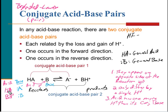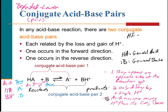The third thing to notice: the acid has one more hydrogen than its conjugate base. So if HA is an acid, its conjugate base has one fewer hydrogen. If B is a base, its conjugate acid BH+ has one more hydrogen — it differs only by a single hydrogen. If you remember these three things about Bronsted-Lowry acids and bases, it will be easy to identify which is the acid and which is the base.